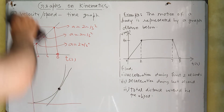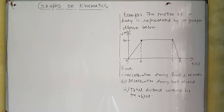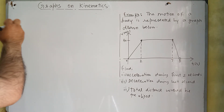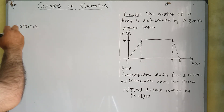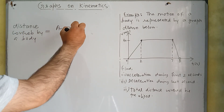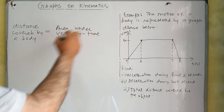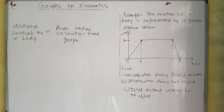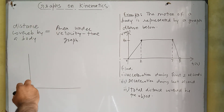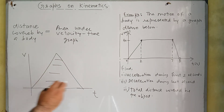Now, at the end, we have a very important formula for the speed-time graph — not for the distance-time graph. If we need to calculate the distance covered by a body, we calculate the area under the velocity-time or speed-time graph. For example, if the motion of a body is represented by a triangular graph, the area of that triangle will be equal to the distance covered by the body.